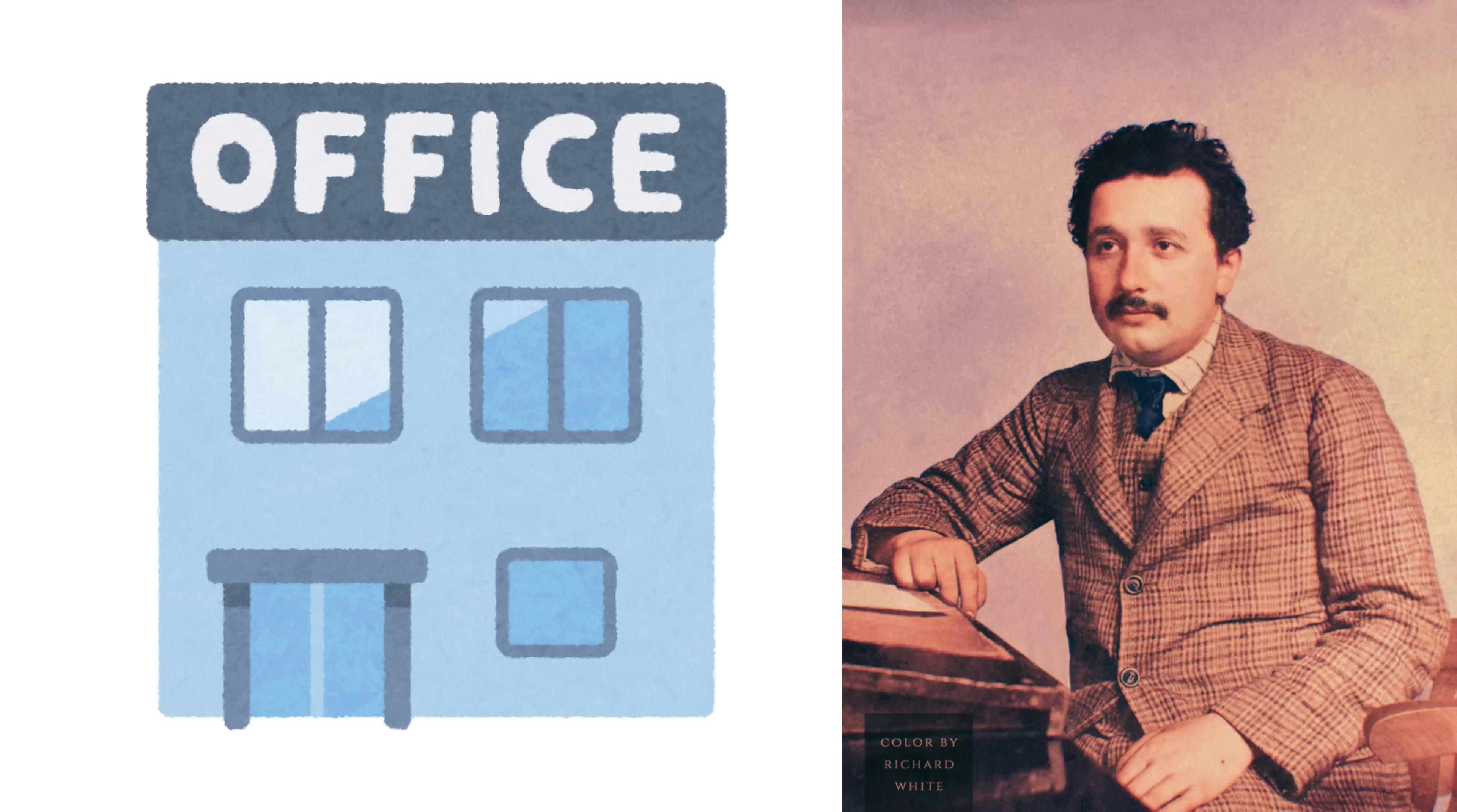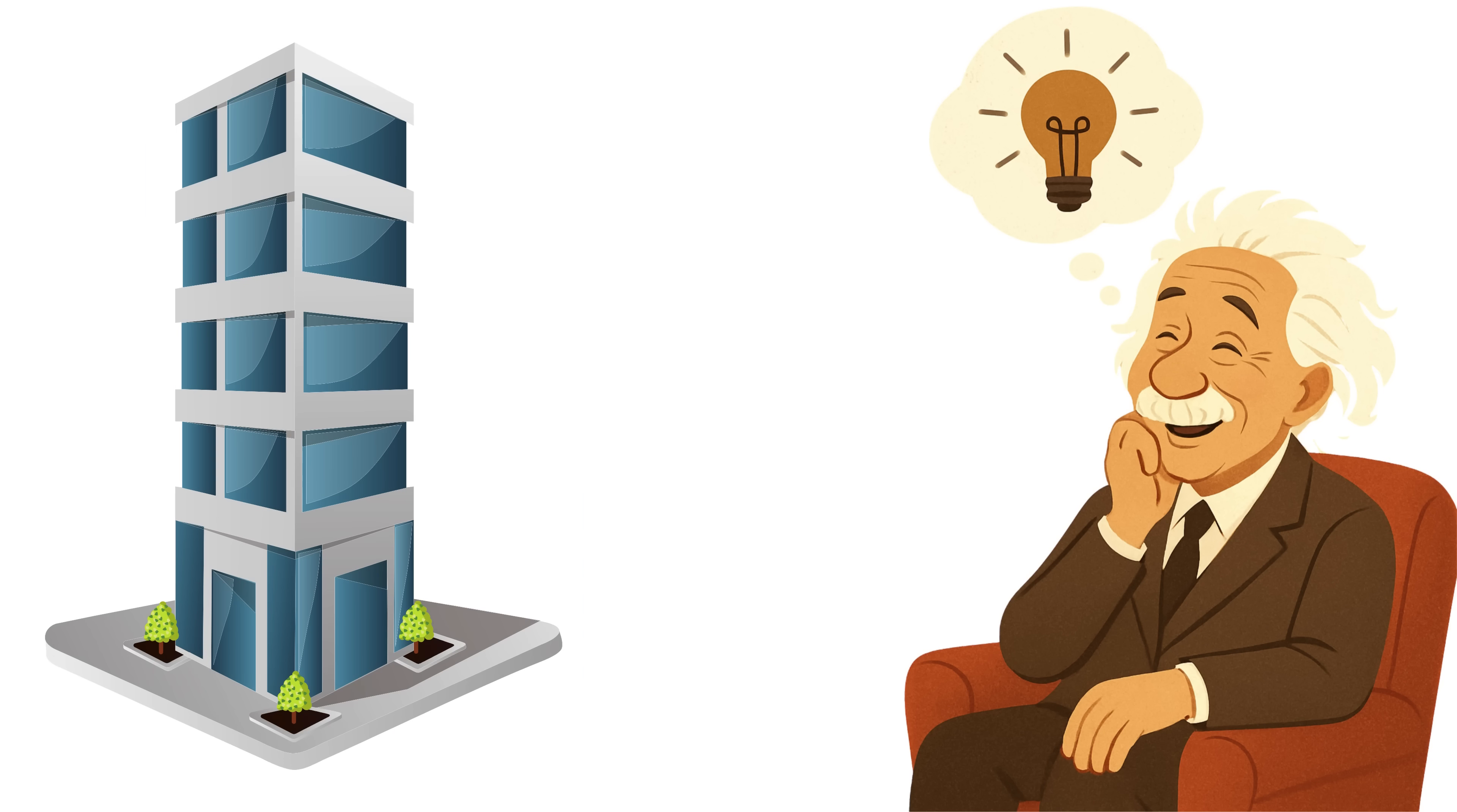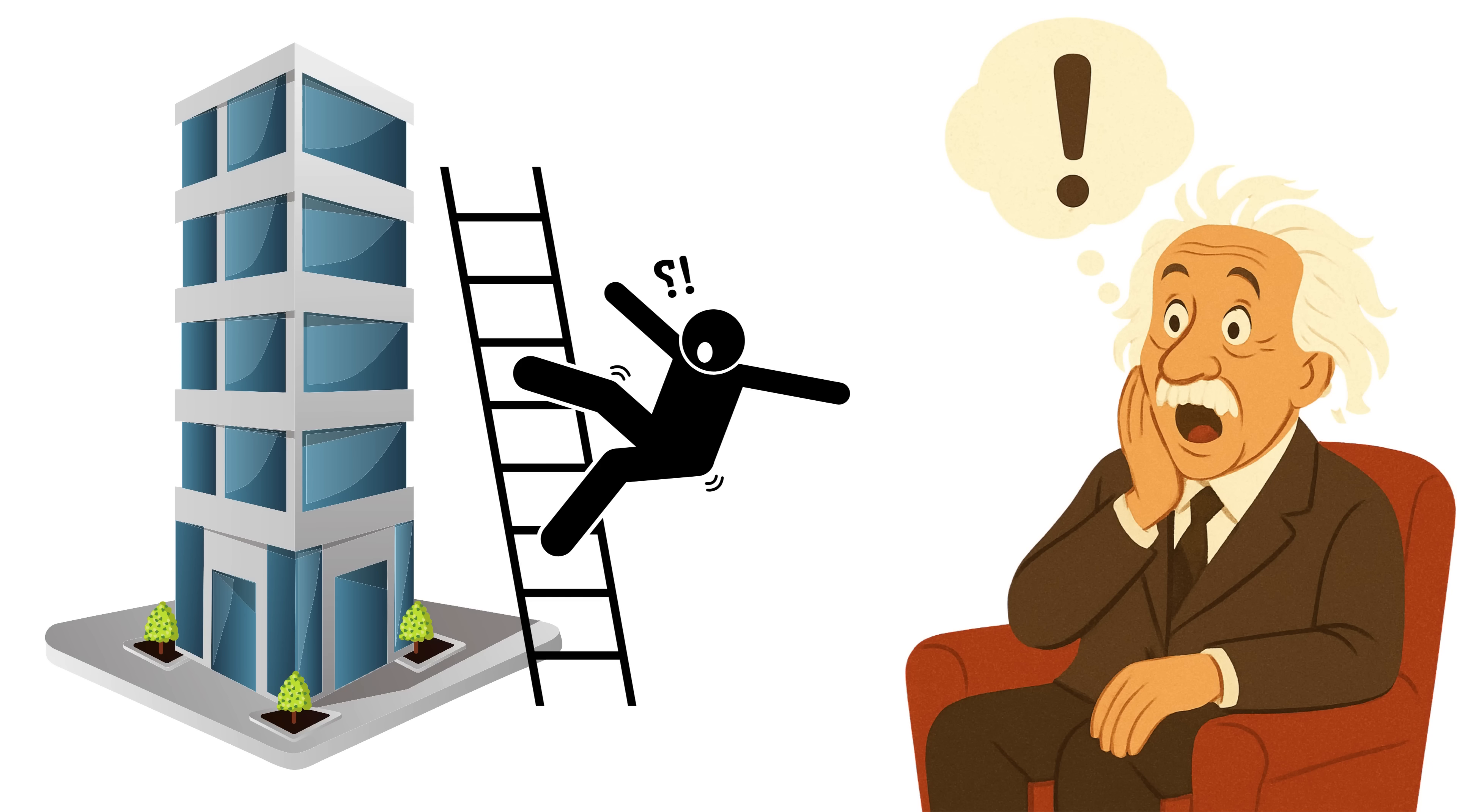Then, in 1907, while working at the Swiss patent office, he had what he called the happiest thought of his life. Einstein did a crazy thought experiment while watching a worker climb a ladder. He imagined what the worker would feel if he fell from the ladder, and although that's not exactly a cheerful thought, it helped him realize something powerful in theory.